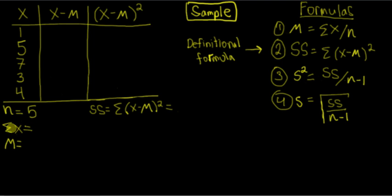Now next we want to calculate our sum of scores or sum of x. So we're just going to sum up each of these individual values. So we have one plus five plus seven plus three plus four. That gives us 20.